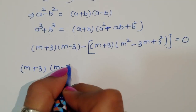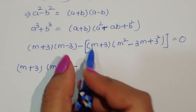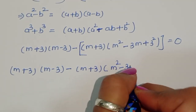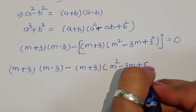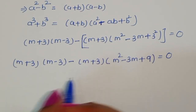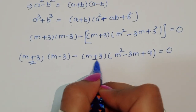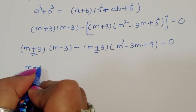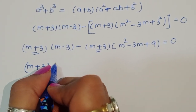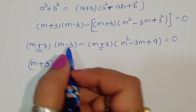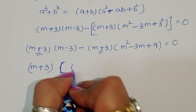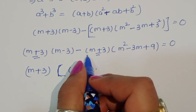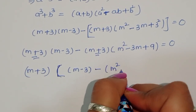Now (m plus 3) is common in both terms. We take (m plus 3) common, so we get (m plus 3) times the remaining bracket. The left term gives us (m minus 3) and from the second term we get (m squared minus 3m plus 9).